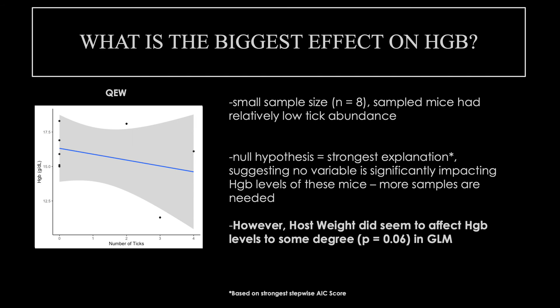Queen Elizabeth's Wildlands had a small sample size, and hemoglobin samples were only collected from mice with low tick abundance, so the results here are lacking in power. This may explain why the null hypothesis was the strongest explanation based on a stepwise AIC. In this case, there is no variable that best explained what was affecting hemoglobin levels, although it did appear that the host's weight may be playing a role.